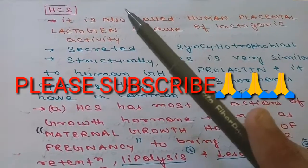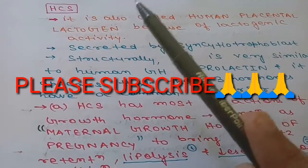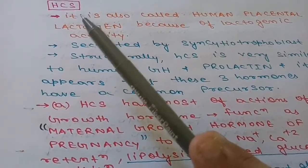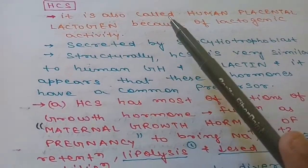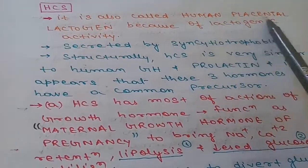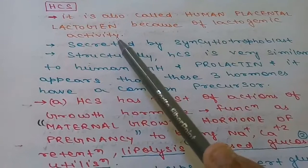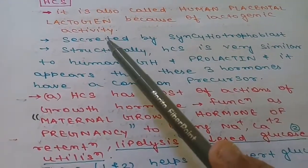In previous video we have discussed progesterone, placental progesterone and HCG. In this video we will discuss HCS, human chorionic somatotropin. First, it is also called human placental lactogen because of its lactogenic activity, as we will discuss later in more detail.